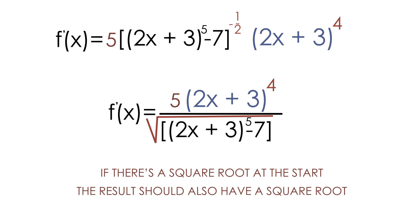Our final answer is 5 multiplied by 2x plus 3 to the fourth, all over the square root of 2x plus 3 to the fifth minus 7.